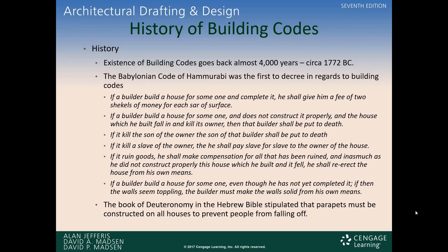Let's read through these. If a builder builds a house for someone and completes it, he shall give him a fee of two shekels of money for each star of surface — basically he must get paid for what he does. That's not a big deal; we do that today. If a builder builds a house for someone and does not construct it properly, and the house which he built falls in and kills its owner, then that builder shall be put to death.